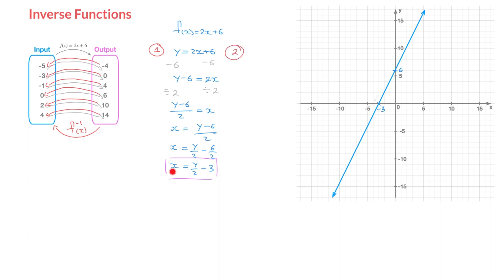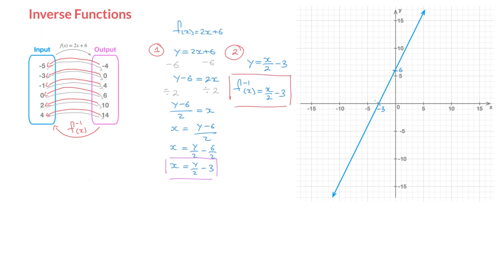I move on to step 2, in which I swap the x and the y in the expression I just found and define the inverse function. Copying this expression but swapping x and y leads to y = x over 2 minus 3. Replacing y by the notation for the inverse function, we define this function's inverse function: f⁻¹(x) = x/2 minus 3. And that's the answer — we now have an expression for the inverse function.